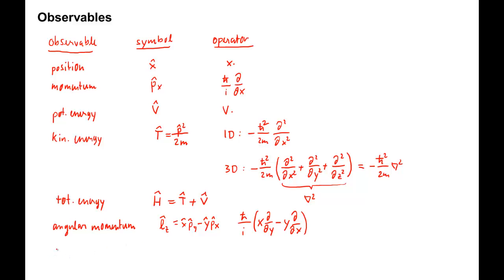For time, there is no operator. Since time is not a measurable quantity, you can't measure the time of an object.